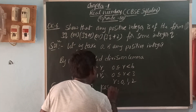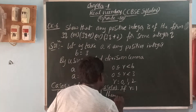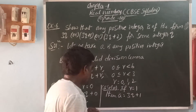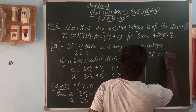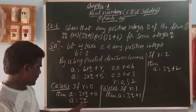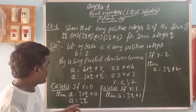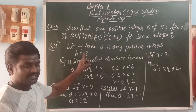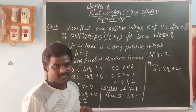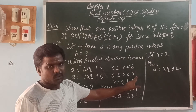Case 2: if R equals 1, then A equals 3Q plus 1. Case 3: if R equals 2, then A equals 3Q plus 2. So the positive integer can be shown as A equals 3Q, A equals 3Q plus 1, or A equals 3Q plus 2. This is proved by using Euclid division lemma: A equals B into Q plus R. With divisor 3, we get A equals 3Q plus R, and using the remainder values 0, 1, and 2, we complete the proof.